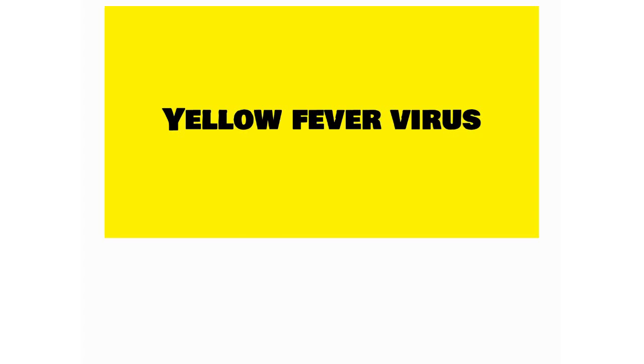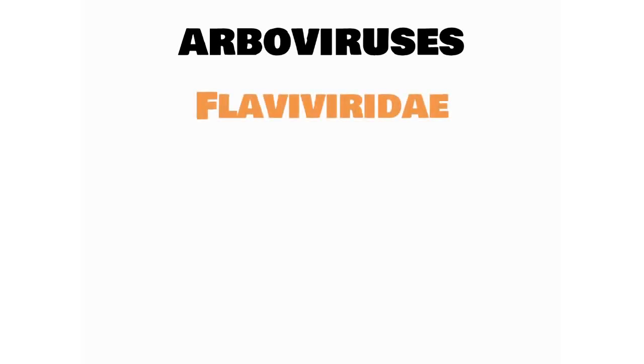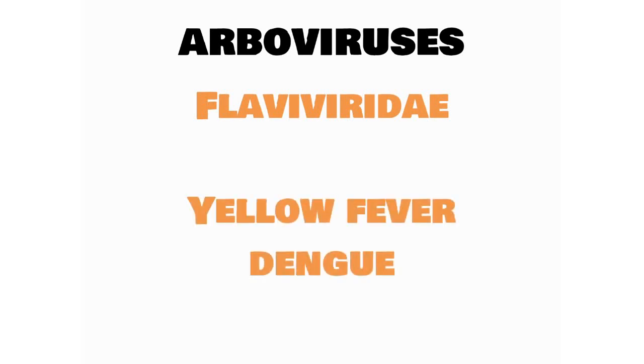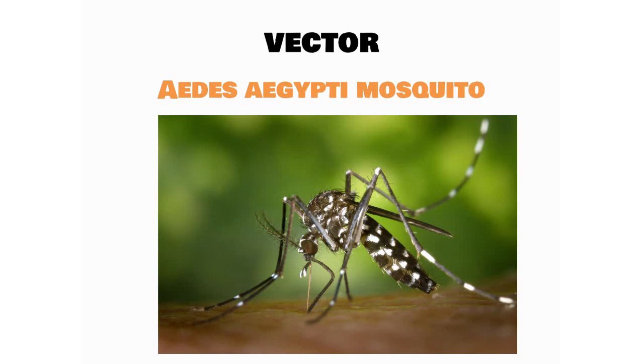This video is about yellow fever virus. Yellow fever virus belongs to arboviruses — arboviruses are arthropod-borne viruses, so these viruses are generally transmitted by arthropods. Yellow fever virus belongs to the Flaviviridae family. In the Flaviviridae family, the most important viruses to study are yellow fever virus and dengue virus. The vector for transmission of yellow fever virus is the Aedes aegypti mosquito.